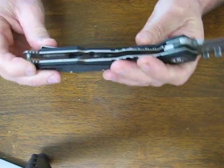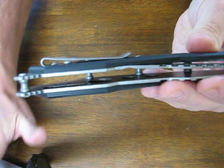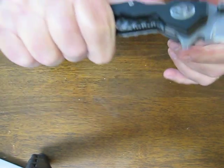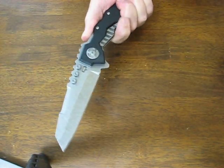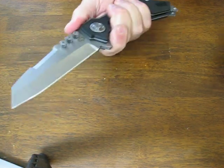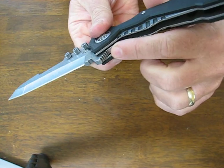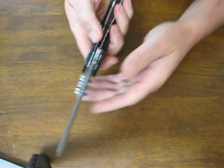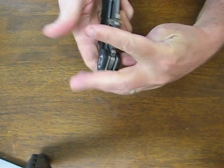The rear portion of the handle has some jimping on it here to aid your grip. You can move all the way back on this and have a good grip. You can move farther forward. Notice that there's also jimping here on the flipper which transforms into a guard in the open position.